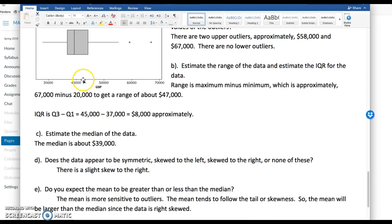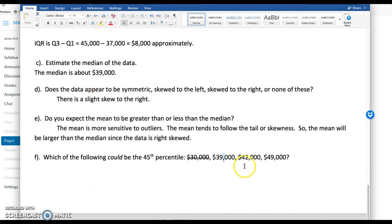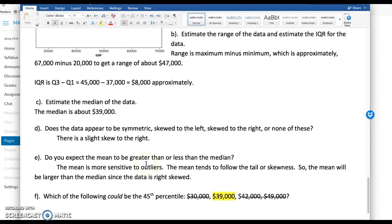42,000. Notice right here, 42 is right here somewhere. 42 has to be greater than the 50th percentile because it passed the mean. So it cannot be 42,000. And we can make a similar argument for 49,000. It cannot be these options. So 39,000 is the only plausible possibility for the 45th percentile on this problem.